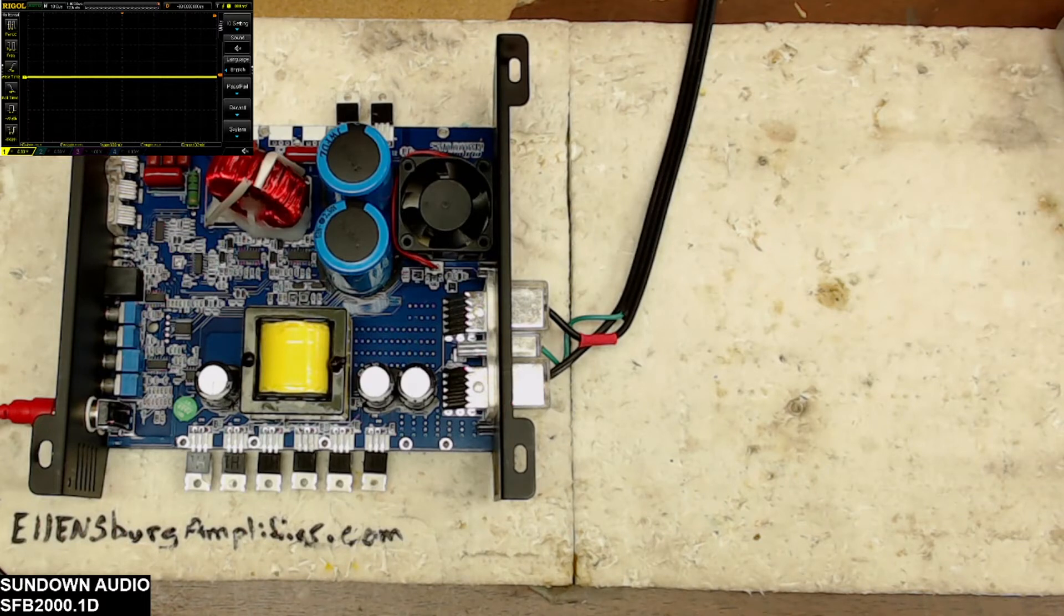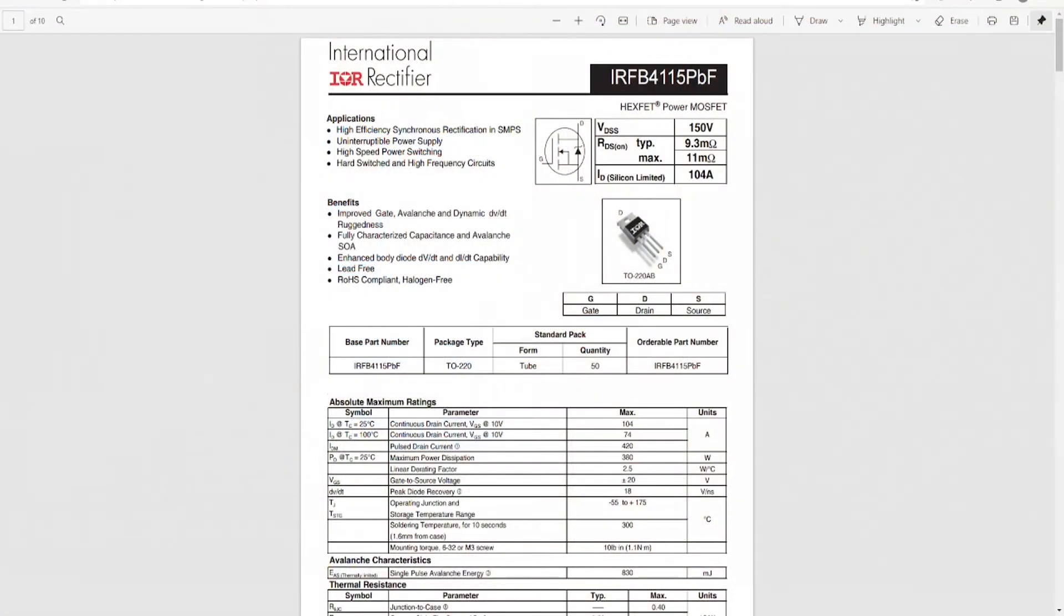I'm going to test an IRFB 4115. Here's a data sheet for the 4115 here. So the 4115 is coming up at 7 nanofarads at 4.6 volts. Yeah, that 4115 is coming back at about 4.6 volts on the threshold.